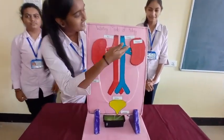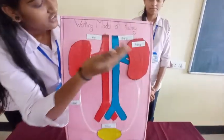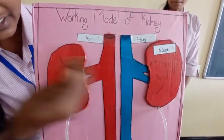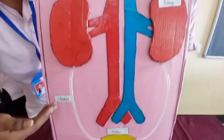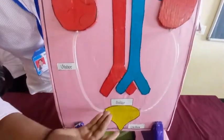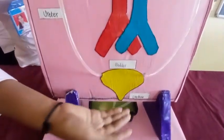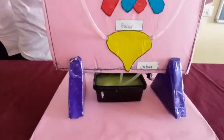This is the kidney. Its parts include the vein, artery, ureter, bladder, and urethra.